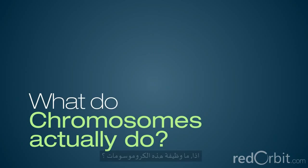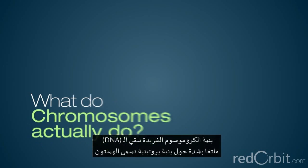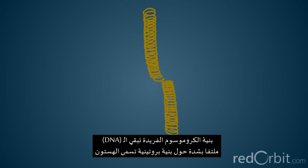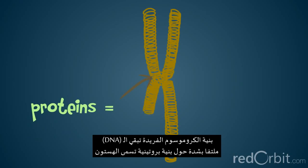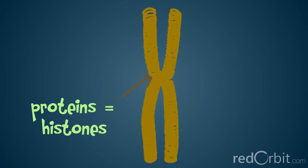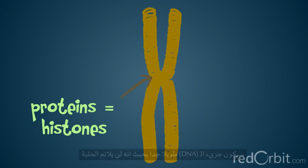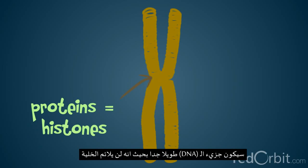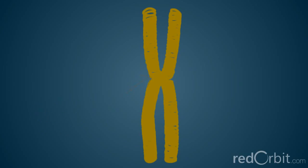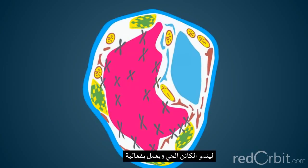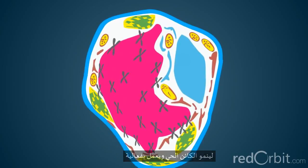So what do chromosomes actually do? The unique structure of chromosomes keeps DNA tightly wrapped around spool-like proteins called histones. Without such packaging, DNA molecules would be too long to fit inside cells.